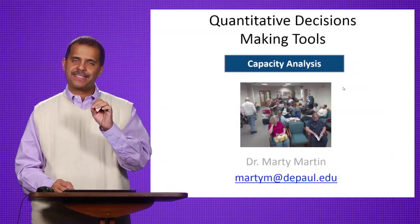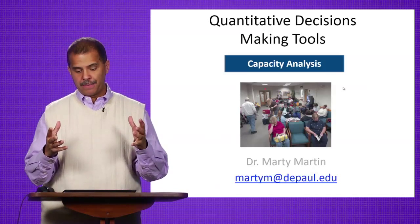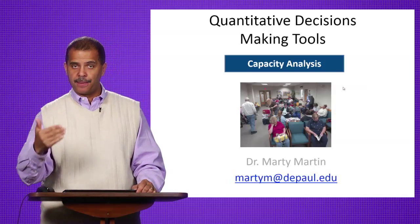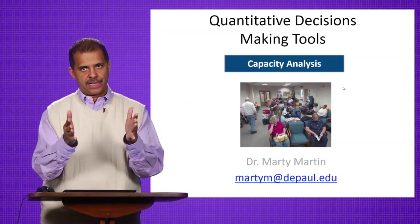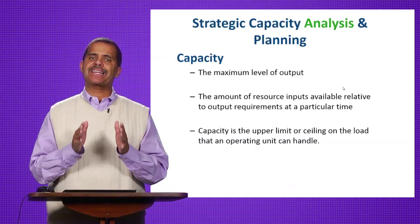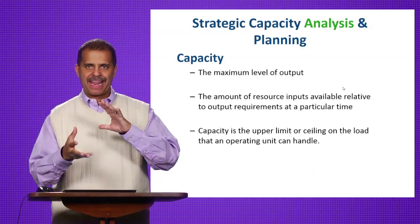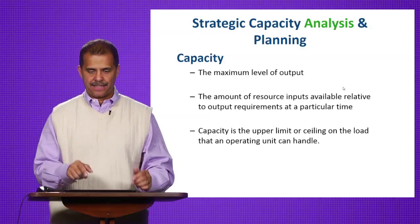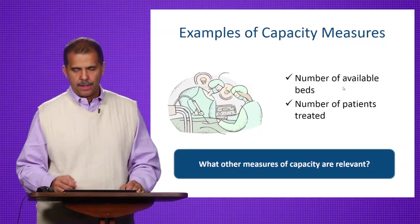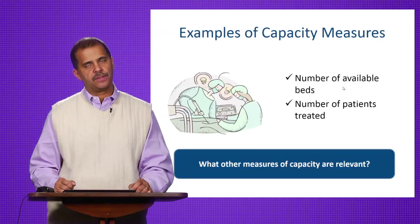Now let's talk about the second tool: capacity analysis. Going back to that image of the crowded waiting room, it's probably because either demand is too high or capacity is not enough — hence the chaos in the hallways. Capacity is the maximum level of output — it's really about balancing demand with the resources available to meet that demand. Some examples of capacity measures in healthcare include number of available beds and number of patients treated. Can you think of any others in your particular setting?